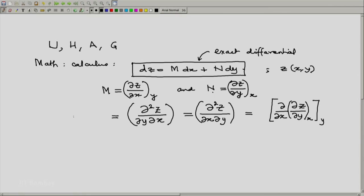Similarly, on the left hand side, the proper way of writing this would be first take the partial derivative of z with respect to x at constant y and then take the partial derivative of this with respect to y at constant x.